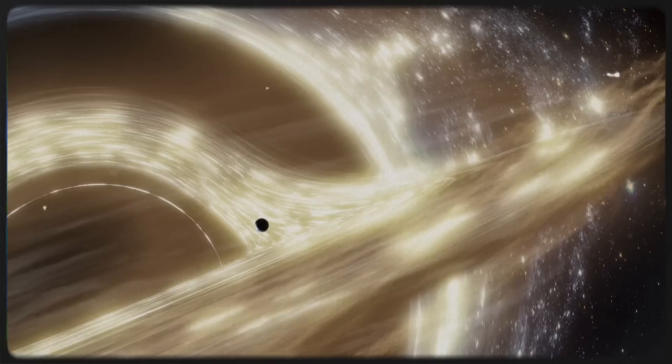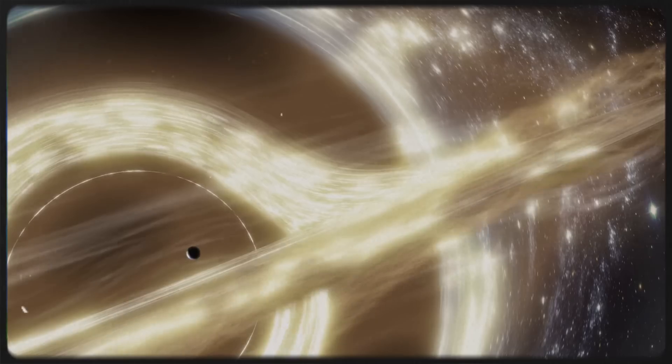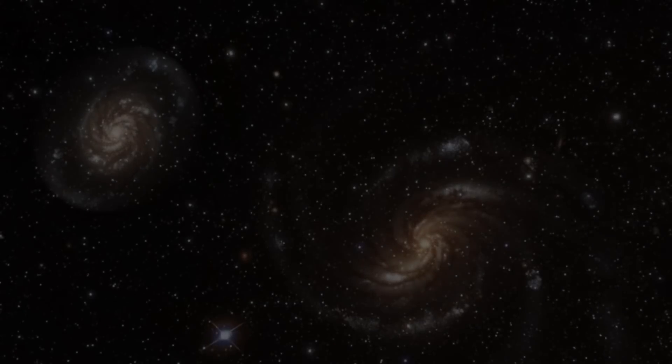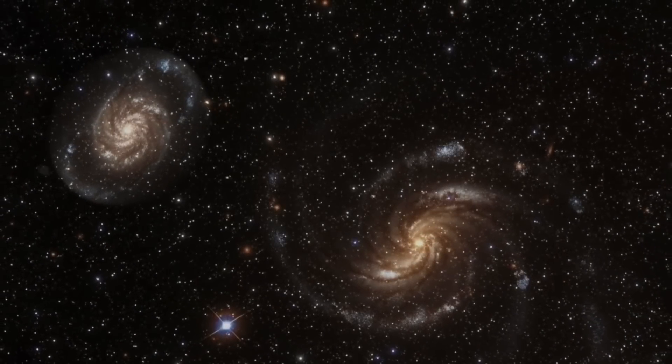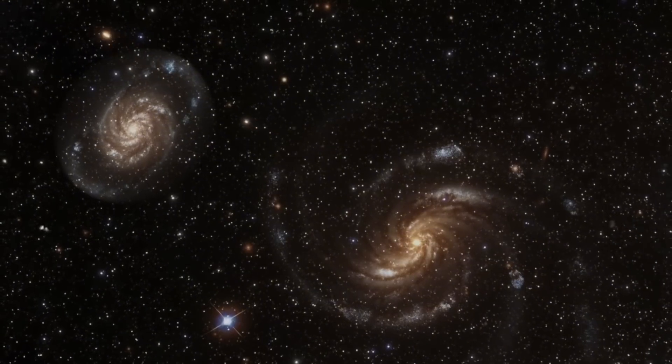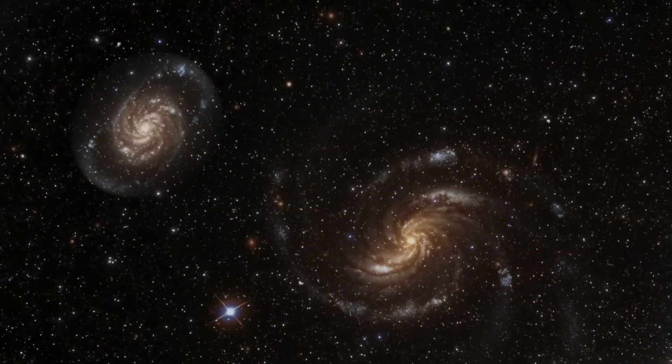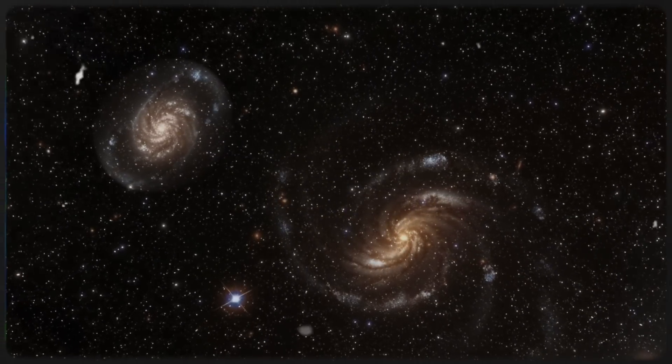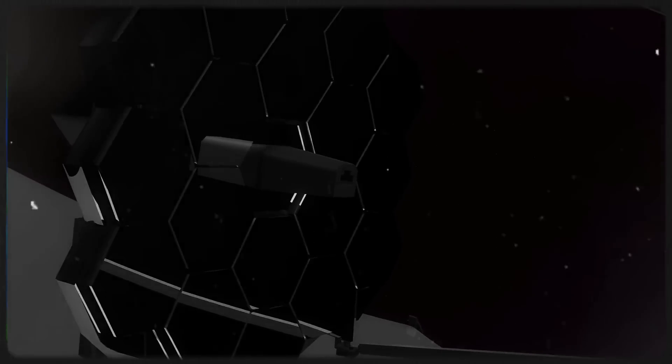One possible explanation is that black holes grow in bursts, consuming vast amounts of matter during short but intense periods of activity. These bursts may be triggered by galaxy mergers, which funnel gas toward the galactic core, feeding the black hole. Another theory suggests that some black holes may have started out much larger than previously thought, possibly forming directly from massive gas clouds instead of collapsing stars. The James Webb Space Telescope's ability to peer deep into the past is now providing new data to test these ideas.